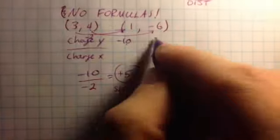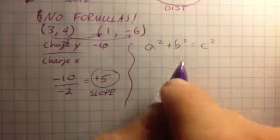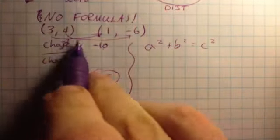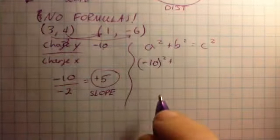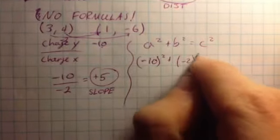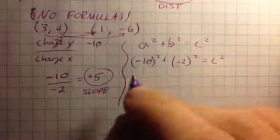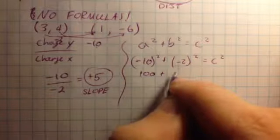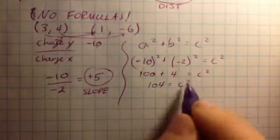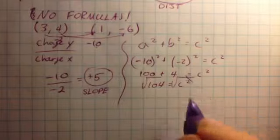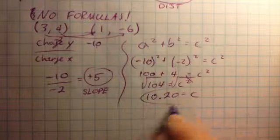Alright, let's do the distance now. Let me use Pythagorean theorem for this: a squared plus b squared equals c squared. If you'll remember, a and b are the same as my change in y and change in x. My change in y was negative 10 squared, my change in x was negative 2 squared equals c squared. Negative 10 squared is 100, negative 2 squared is 4, so 100 plus 4 is 104 equals c squared. Gotta get rid of that squared, so you take the square root of both sides, and the square root of 104 was 10.20, and that's your c or your distance.